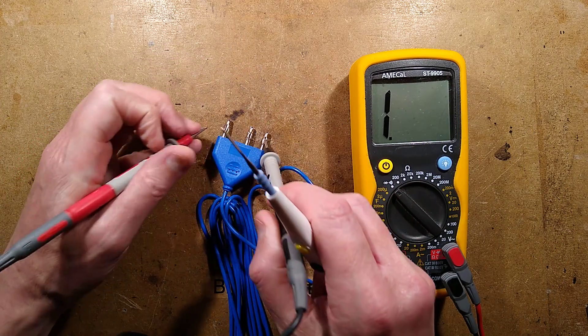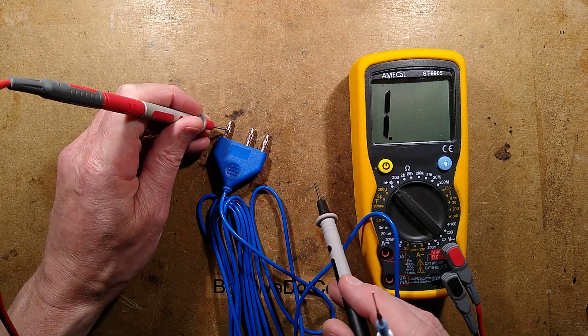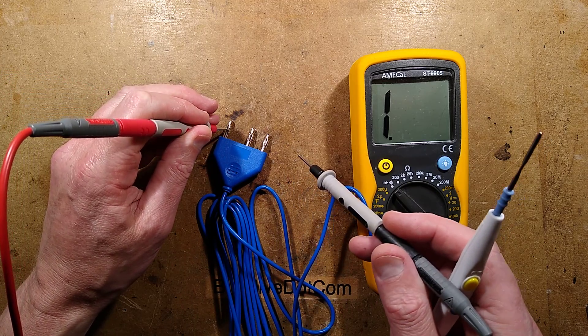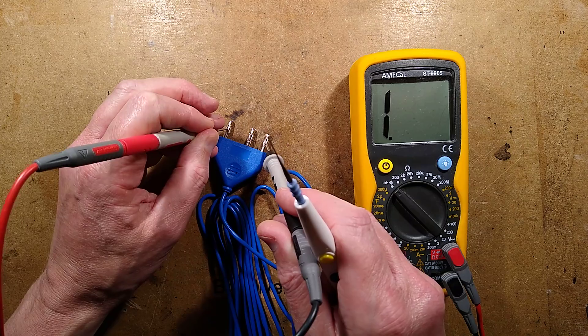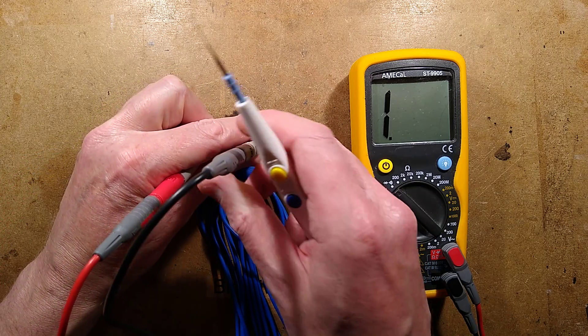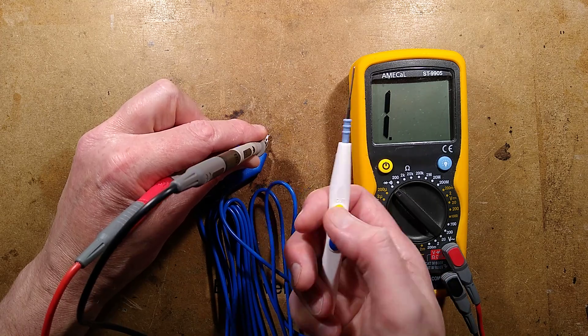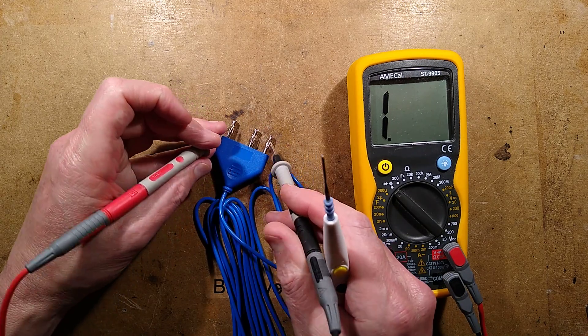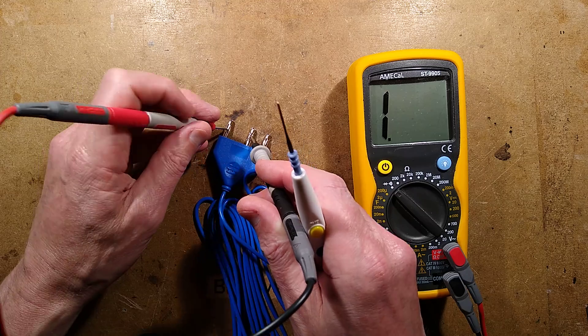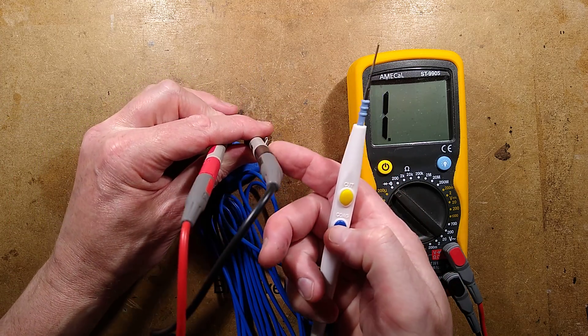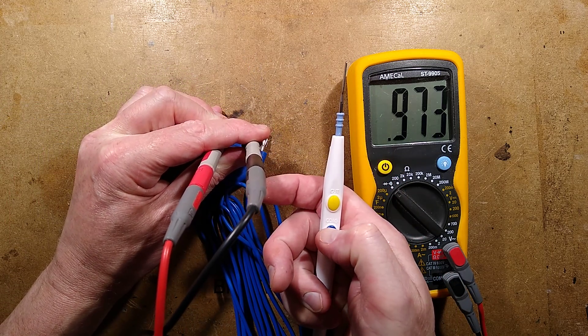So that is now on the common here which goes to the tip of the diathermy pen and this is on one of the connections. Is that just a button per connection? Oh that is just a button to that one, so that's the cut button - this connects this to this. And this, is it going to be the same? It is.